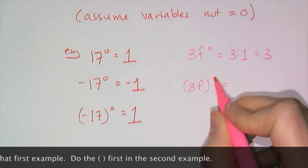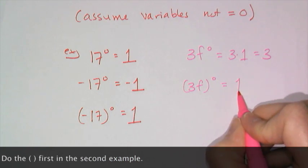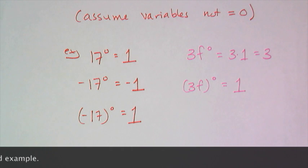And if I group it together remember in parentheses that means this entire quantity goes to zero. So then I just get one of course assuming that f is not equal to zero.